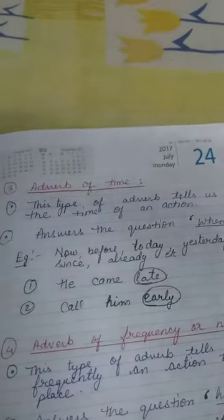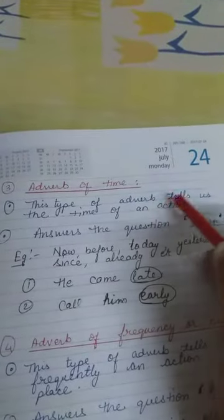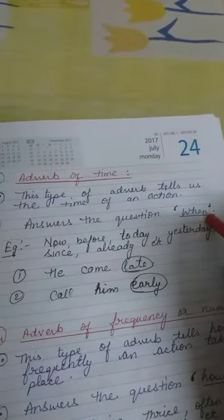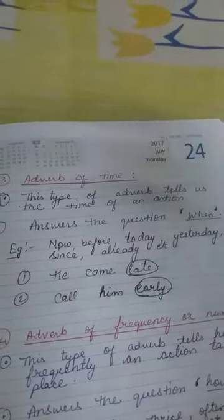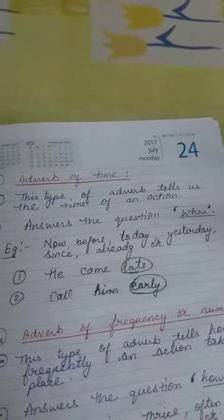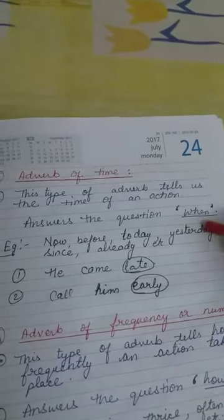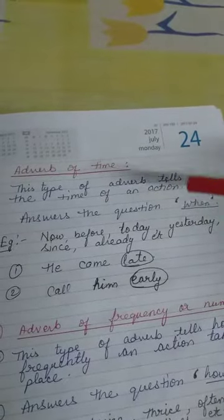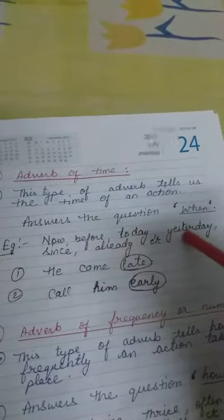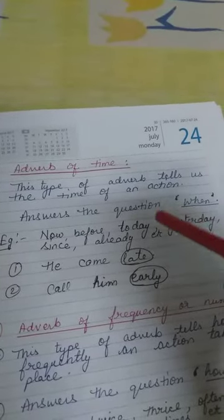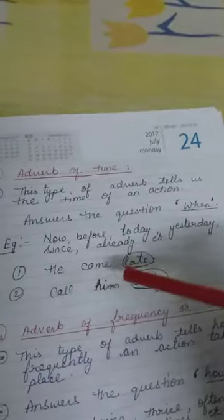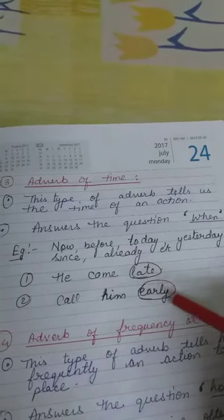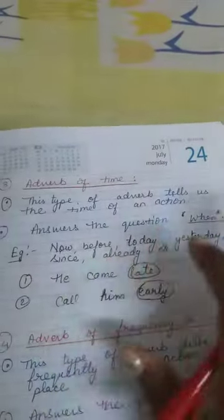Now, adverb of time — these adverbs tell us the time of an action and answer the question 'when.' Words that fall under this category are: now, before, today, yesterday, since, already, etc. For example: 'He came late' and 'Call him early' — 'late' and 'early' are adverbs of time because they tell you about a particular time.